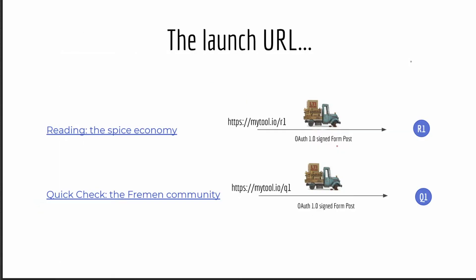In LTI 1.1, the launch URL is a common way for a tool to know which resource to display. Each link typically has its own launch URL, which tells the tool which resource to display on launch, and the LTI 1.1 payload is sent directly to that endpoint. Another link means another URL, and the payload goes right to that endpoint.